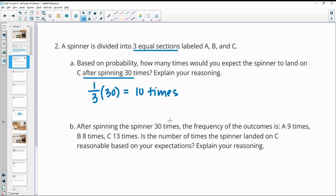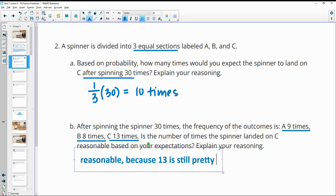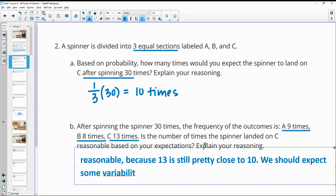After spinning the spinner 30 times, the frequency of outcomes is that we spun A nine times, B eight times, and C 13 times. Is this number of times a spinner lands on C reasonable based on your expectations? We expected it to happen 10 times or 33% of the time, one third of the time, and it happened 13 times. That's still pretty close. I would say that's reasonable because 13 is still pretty close, and you're going to have some variability, so we should expect some variability.